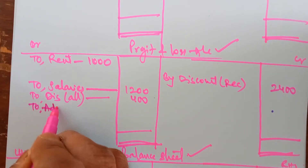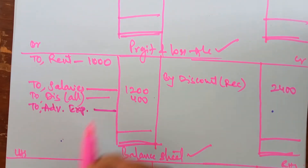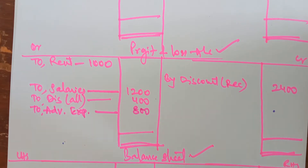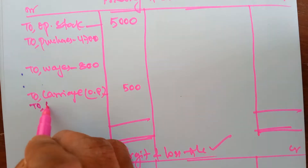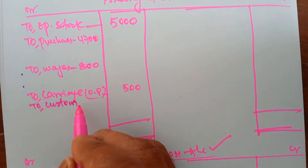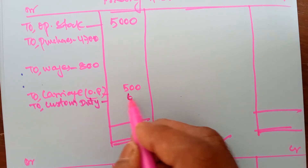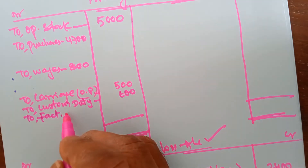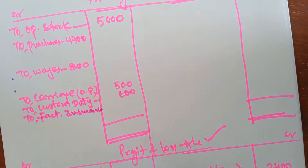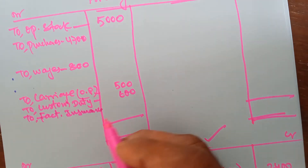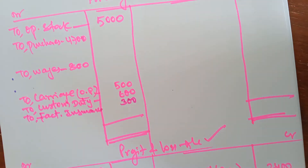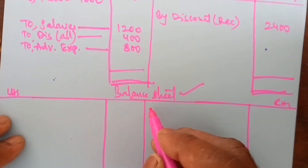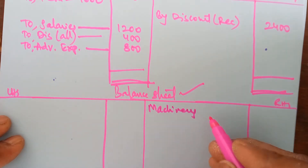The next item is advertisement. Advertisement is always indirect expenditure because it is done while selling goods — without any doubt show it in the profit and loss account. The next item is custom duty. All types of duties become direct expenditure, so take it in the trading account. Next is factory insurance. Since the factory name is given, it means you are insuring goods, so this expenditure is connected with goods and should be taken in the trading account. No adjustment — take the amount to the outer column.